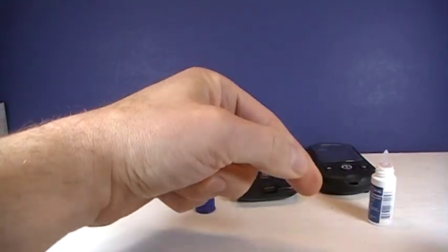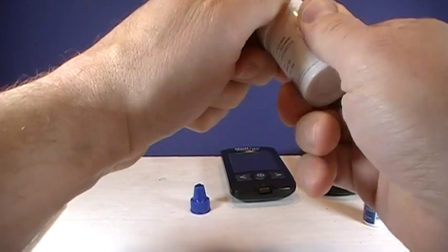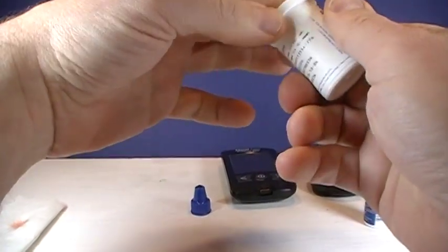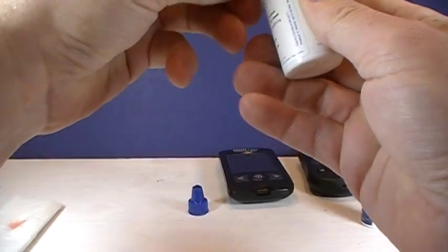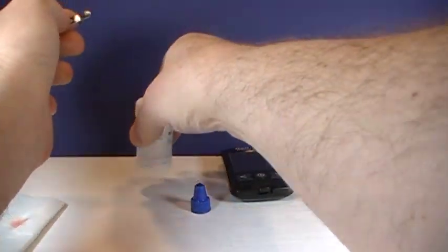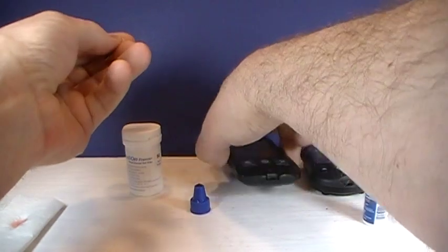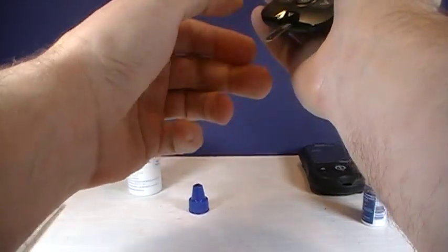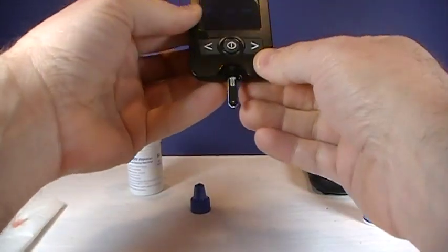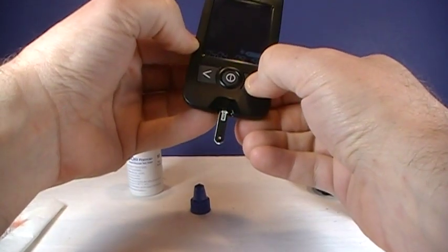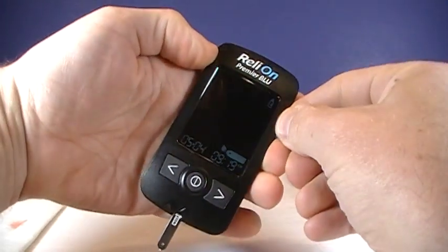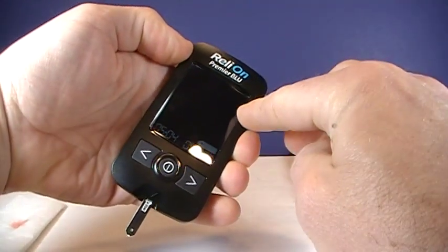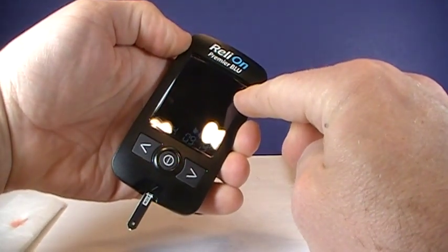Now I'll show you how to do this with the RelyOn Blue. It's the same basic principle except you just want to flag it as a control solution test so it doesn't get calculated into your 7 and 14 day averages or saved in your meter as one of your blood sugar readings. So you insert the strip and then you hold down the button on the right hand side and that will cause a flashing control solution in the corner.